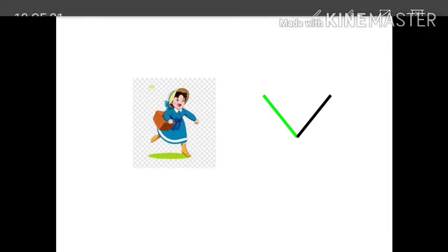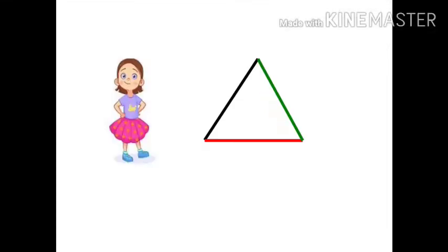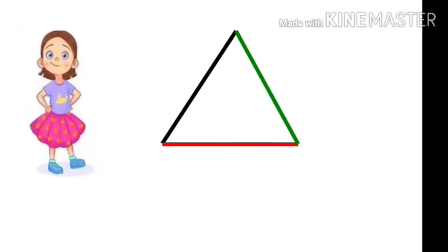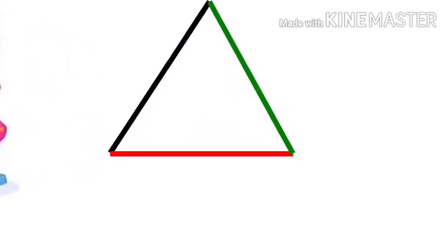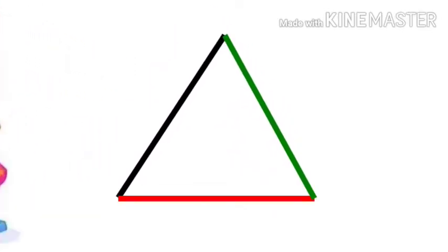Is there any special name for it? Yes. Students, from the 3 sticks she makes a triangle. A closed figure formed by 3 line segments is called a triangle.